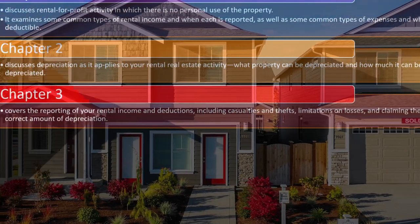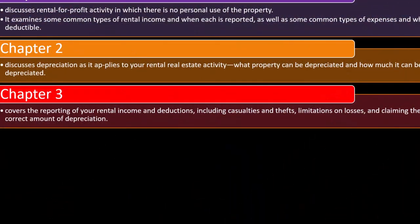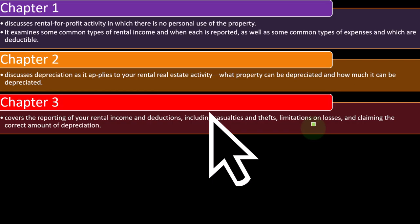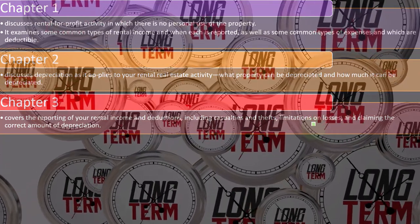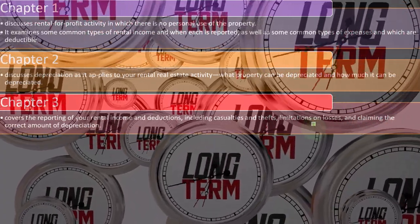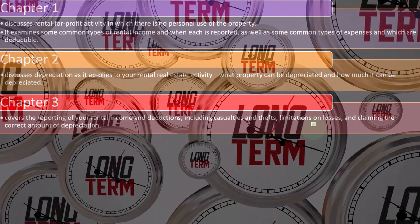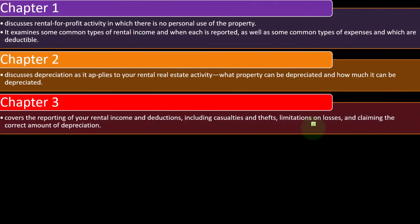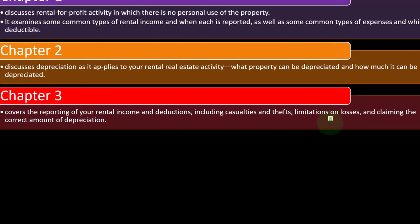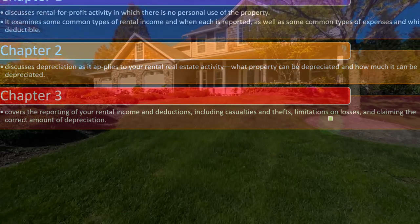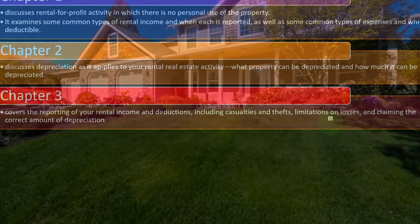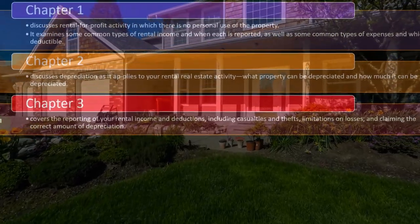Chapter three covers reporting rental income and deductions, including casualties and thefts, limitations on losses, and claiming the correct amount of depreciation. The limitation on losses is important because people often hold rental property as a long-term investment hoping for capital gains appreciation, while potentially running a loss on rental income. The IRS is skeptical of losses taken against other income when the property itself may be appreciating in value.